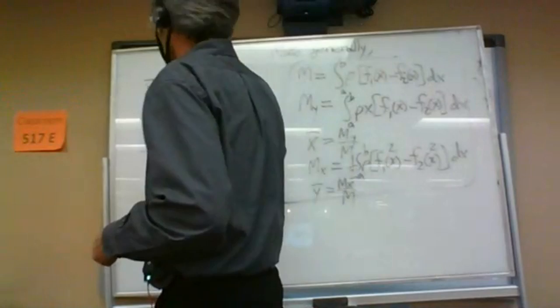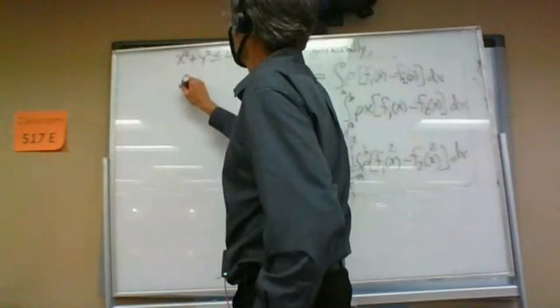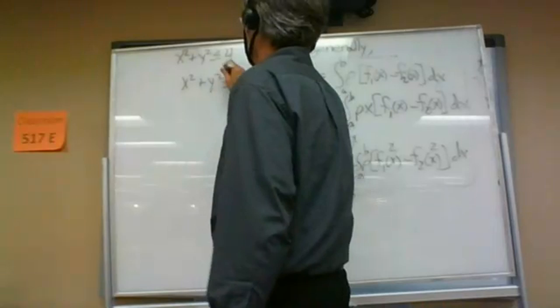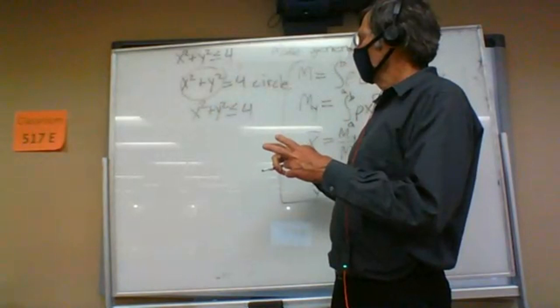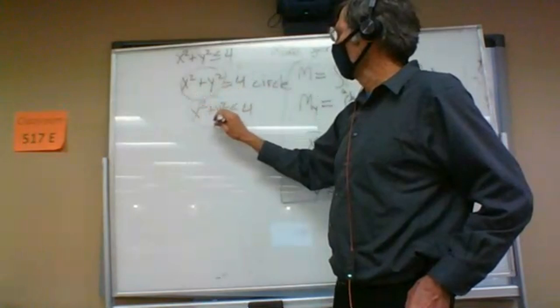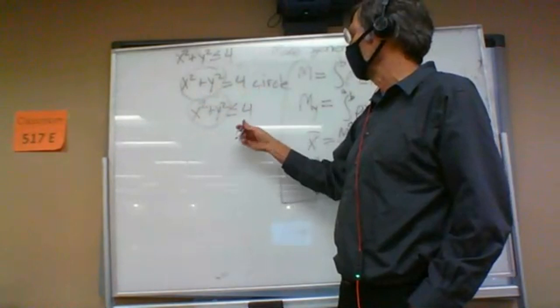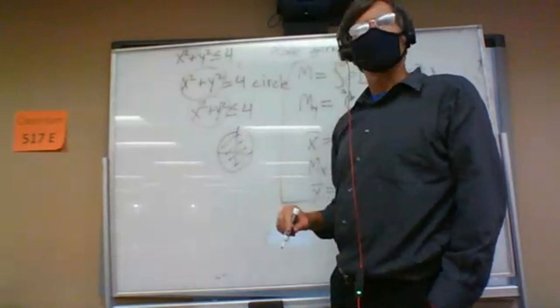I wrote the disk as x squared plus y squared less than or equal to 4. The idea is that the circle is x squared plus y squared equals 4. Since x squared plus y squared is a continuous function, changing to less than or equal to 4 gives the plane region inside the circle — every point will either satisfy this or won't. The only way this can change from less than 4 to greater than 4 is by passing through a point equal to 4. So less than or equal to gives you the inside, and greater than or equal to gives you the outside.